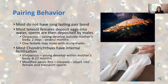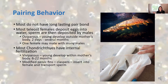Pairing behavior: in fish, most do not have a long-lasting pair bond. Most teleost fish - bony ray-finned fish - the females deposit eggs into the water and then sperm are deposited by males on top of the eggs. That's oviparous, where the young develop outside the mother's body. Development time for the eggs can range from two days to several months. One female may mate with many males and might never actually come in contact with them - eggs are deposited and then multiple males may deposit sperm on top, meaning one clutch of eggs might have multiple different fathers.